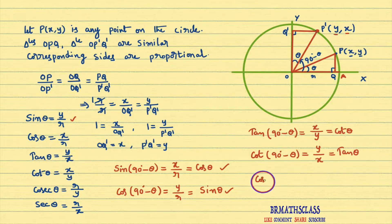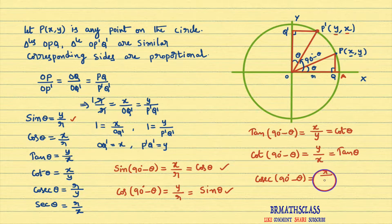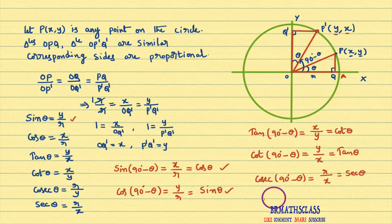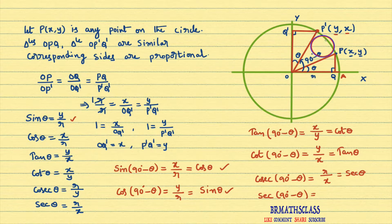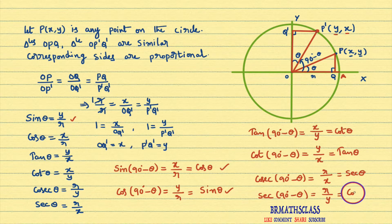Similarly, cosec(90° - θ) is defined as R divided by the y-coordinate of P', which is x. So cosec(90° - θ) = R/x = sec θ. And sec(90° - θ) is defined as R divided by the x-coordinate of P', which is y. So sec(90° - θ) = R/y = cosec θ.